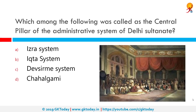Which among the following was called the central pillar of the administrative system of the Delhi Sultanate? That would be the Iqta system. Iqta was an Islamic practice of tax farming that became common in Muslim Asia during the Buid dynasty. The prominent orientalist Claude Cahen described the Iqta as a form of administrative grant, often translated by the European word 'fief'.